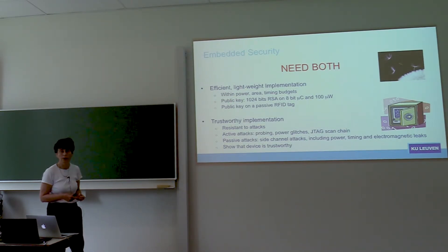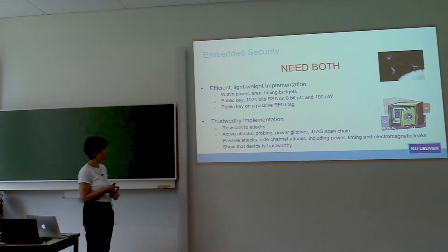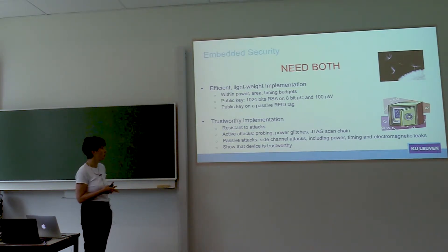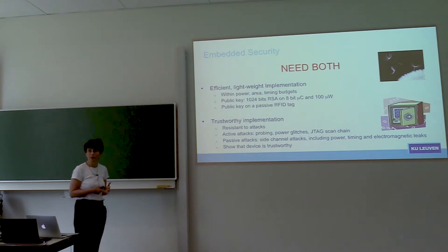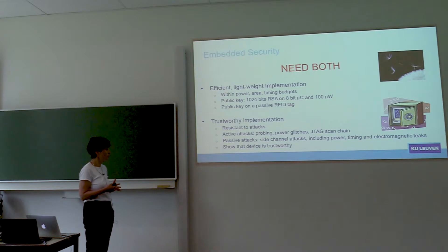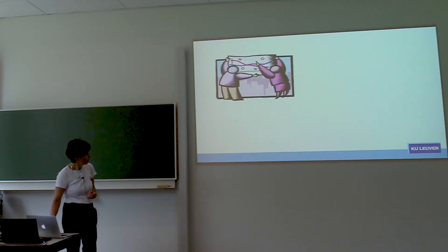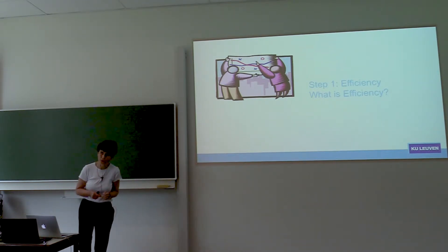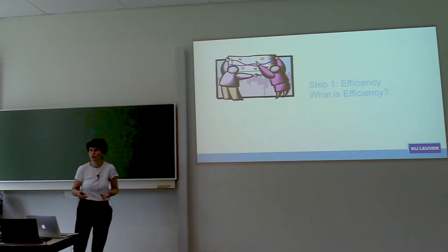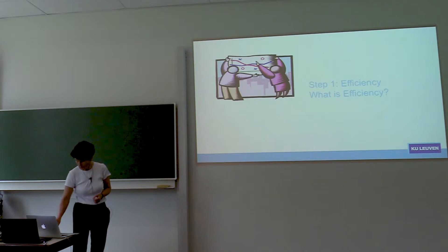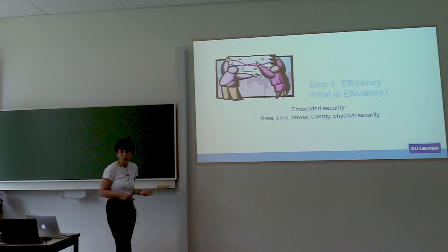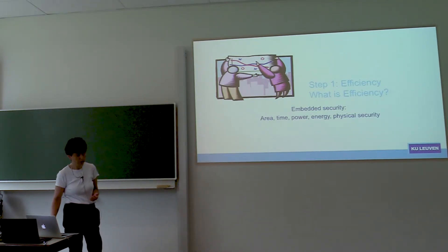We need trustworthy implementations resistant to attacks — active attacks, JTAG attacks as Lennart explained, and passive attacks as Benedict and Josip explained. We also want to show that the device is trustworthy. For embedded security the constraints are: area, time, power, energy, and physical security. Area is relatively easy to measure. For an ASIC — an application-specific integrated circuit dedicated to a specific purpose — we count the number of gates, where the unit is a NAND gate consisting of four transistors.